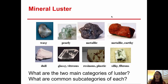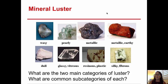When we're trying to identify a mineral, we move on to things like mineral luster. Mineral luster is the way the mineral surface reflects light. There are two main categories of mineral lusters: metallic and non-metallic. Within the non-metallic category, we break it down into waxy, pearly, earthy, glassy or vitreous, dull, resinous or plastic, and silky or fibrous. You should be able to use the pictures shown on this page to help you identify the different mineral lusters.